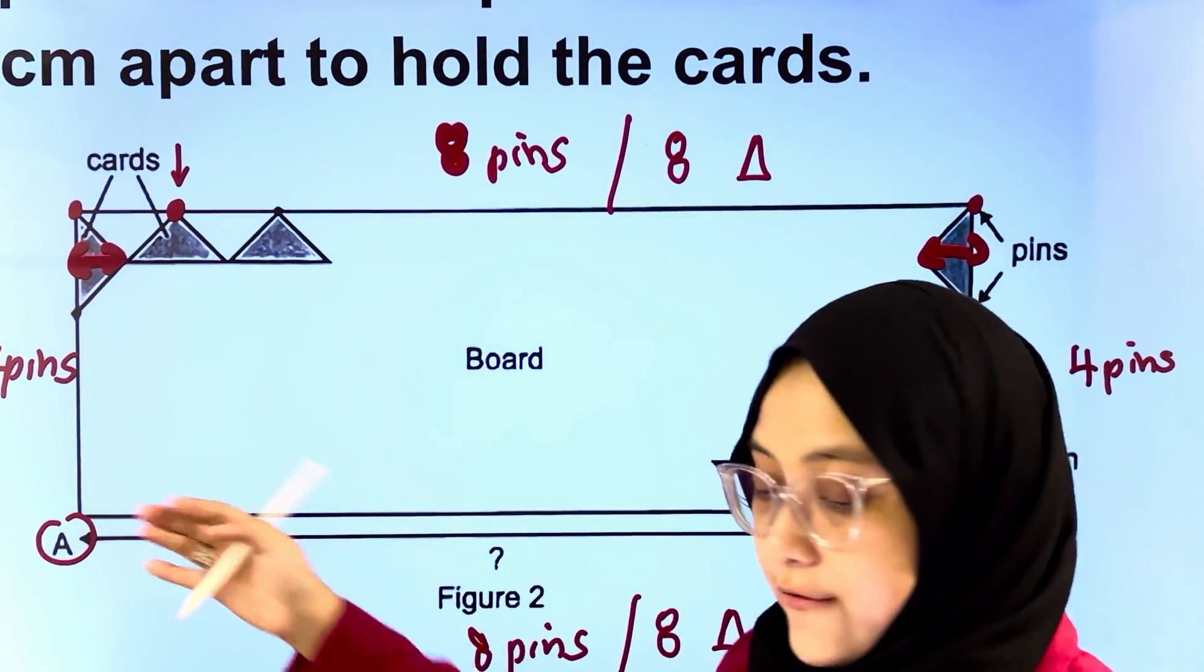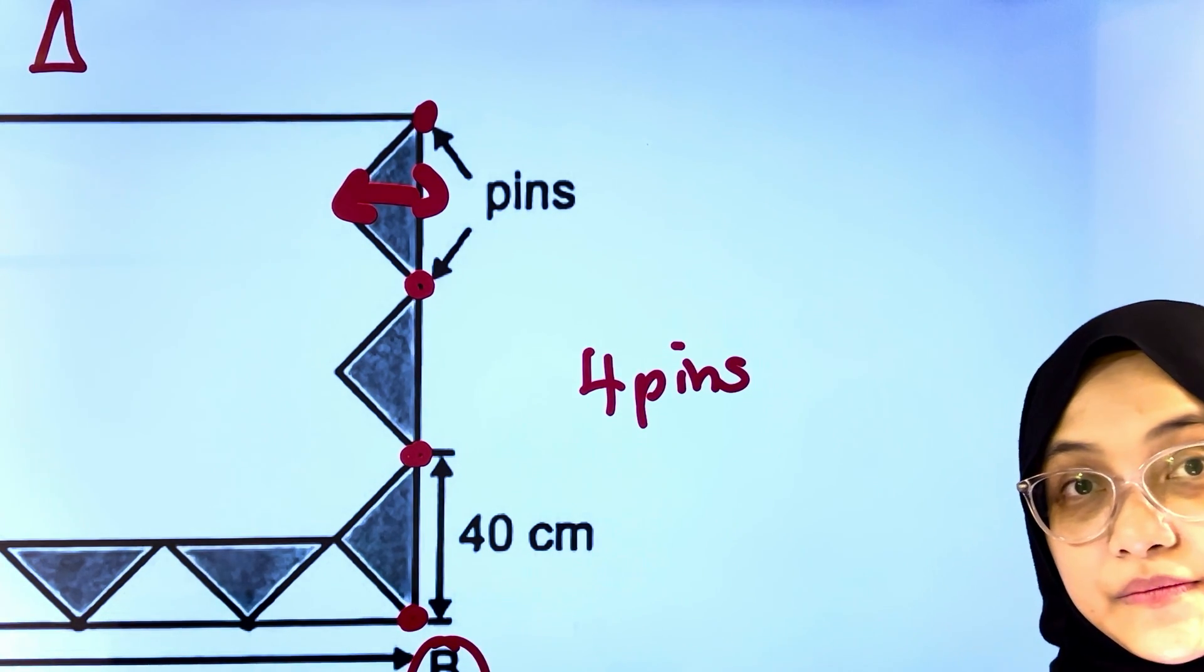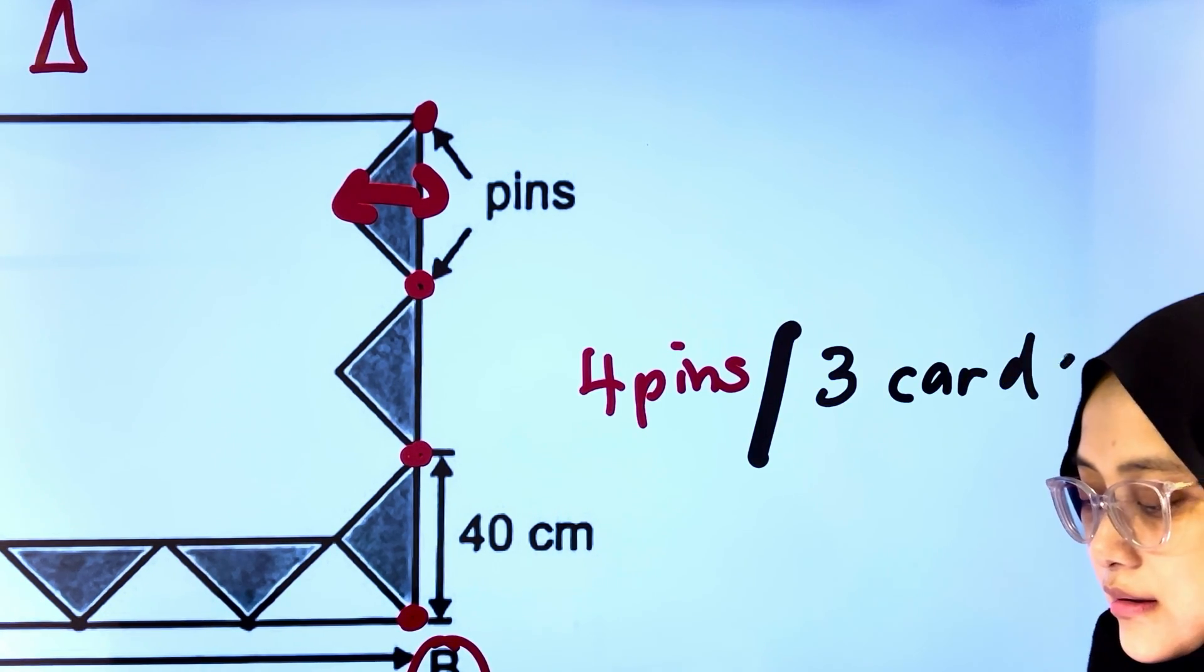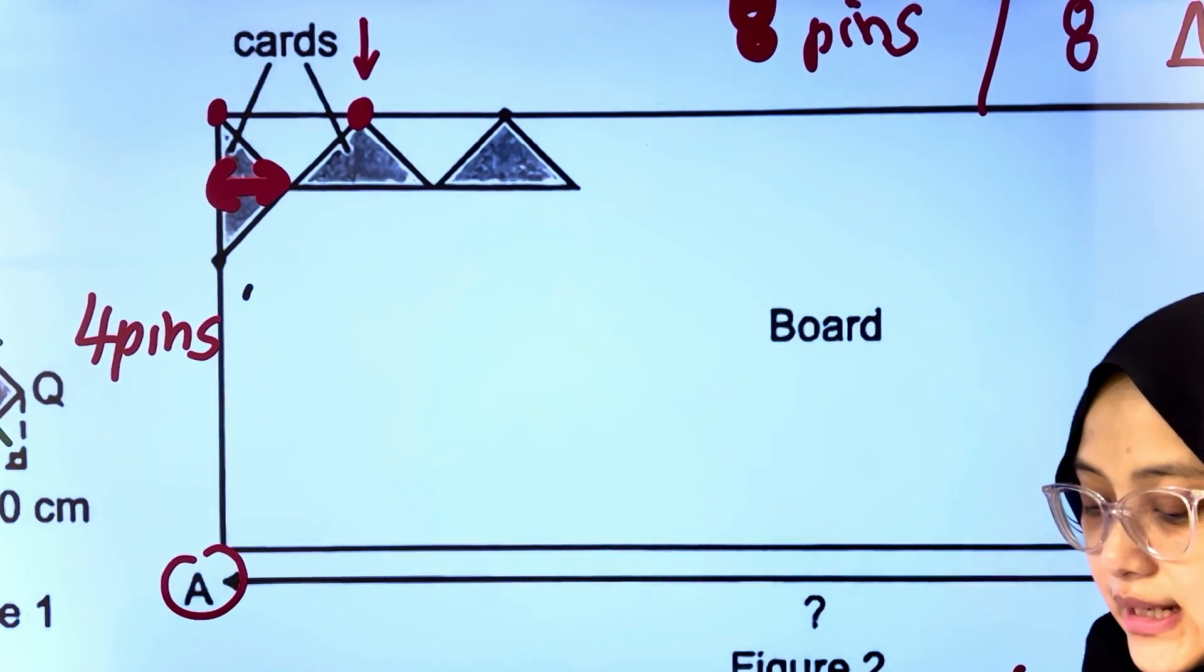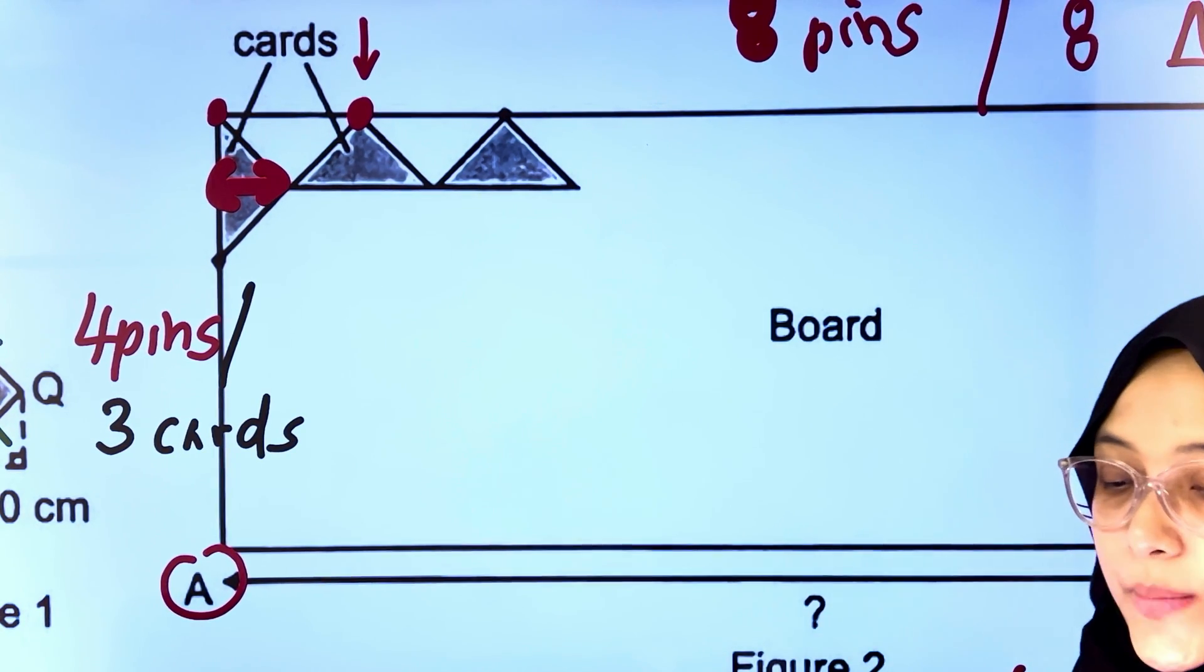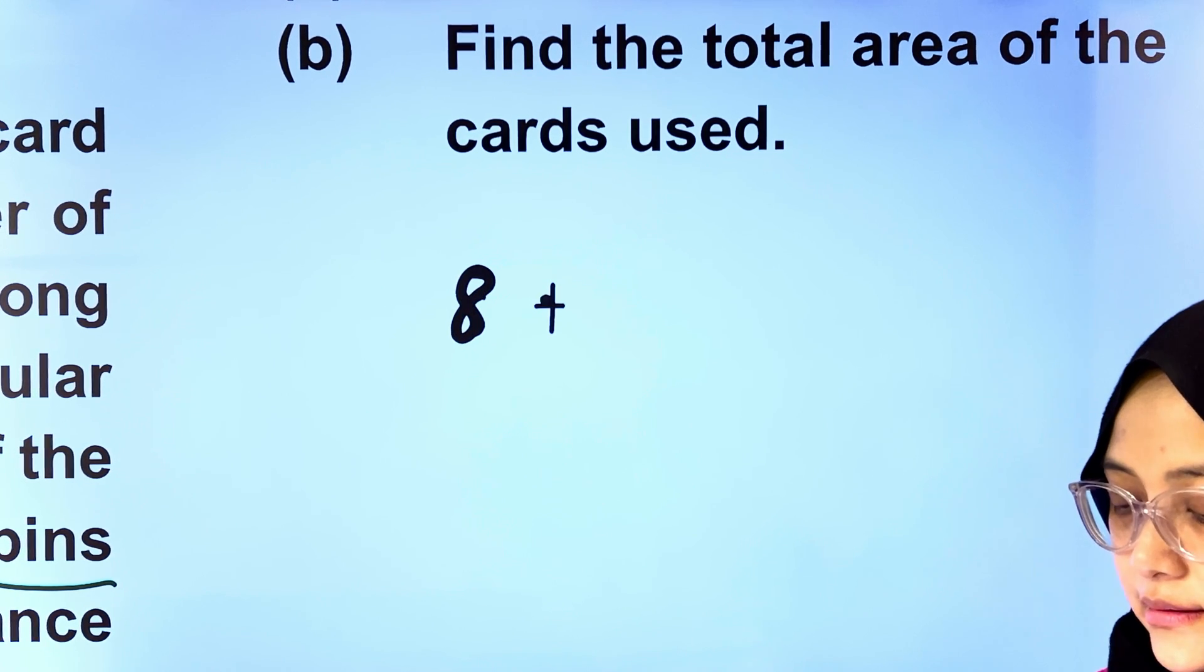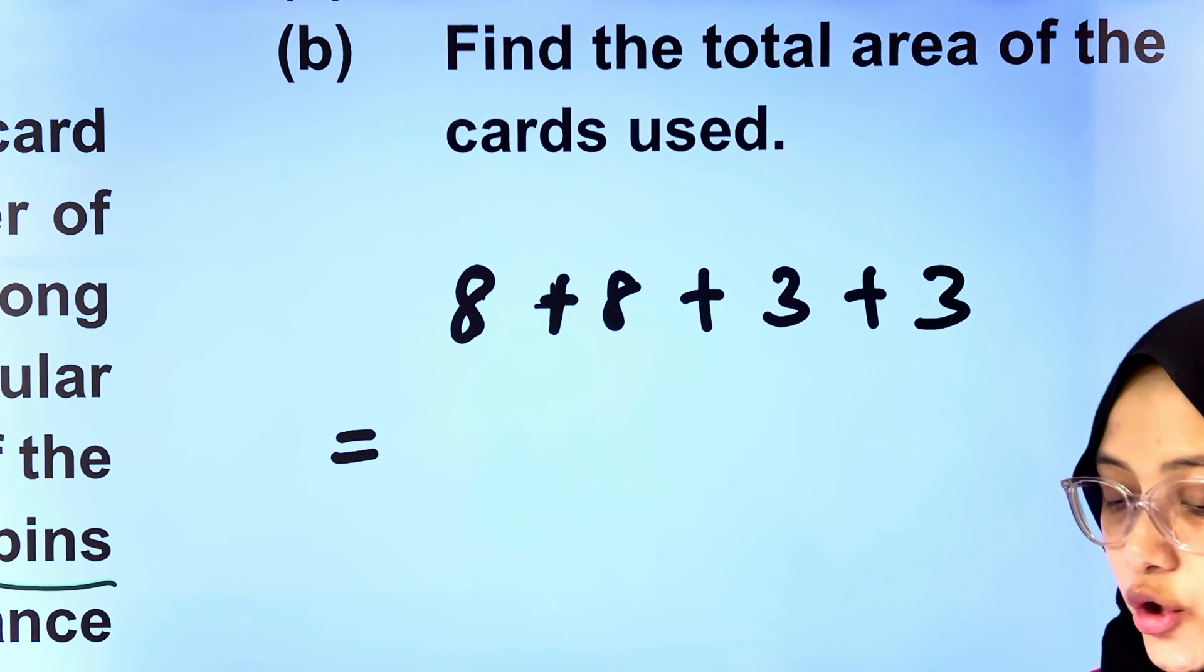Along the breadth, if we look at the right side, three cuts were being used, and rotate over here, four pins, three cuts. Same goes to the left side, three cuts or three triangles. In total, how many triangles were being used? 8 plus 8 plus 3 plus 3, that gives us 22 cuts.